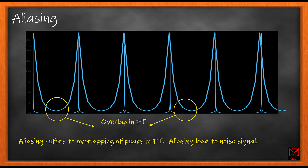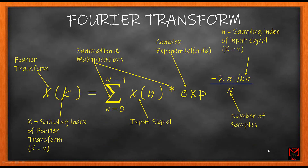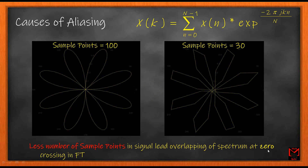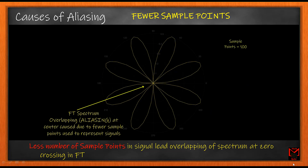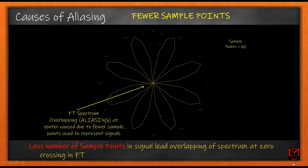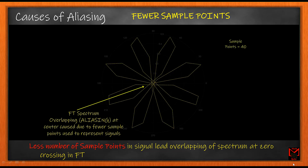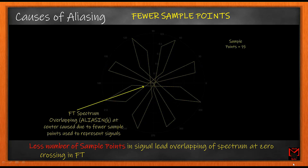The presence of aliasing often leads to a noisy signal and is not recommended in any signal processing. One of the main causes of aliasing in Fourier transform is packing signals with a minimum number of points. As shown here, fewer sample points in a signal leads to overlapping of the spectrum at zero crossing in Fourier transform. In the next video we will see how fewer sample points per signal length leads to closer packing of Fourier transform peaks, causing aliasing.